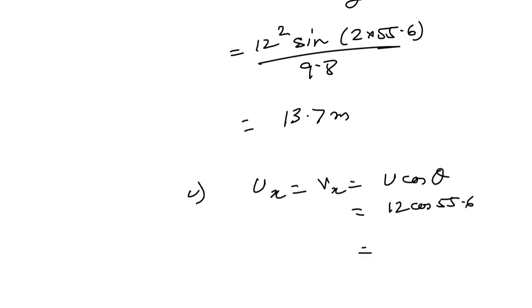u is 12 cos of 55.6, and this is equal to 6.8 meters per second, the horizontal velocity. I hope this is clear to you and have a very good rest of the day. Thank you.